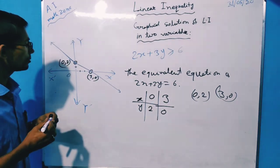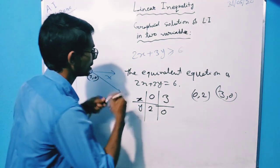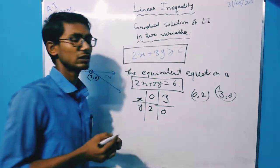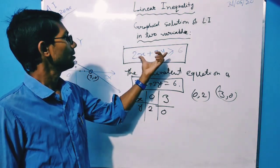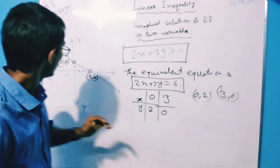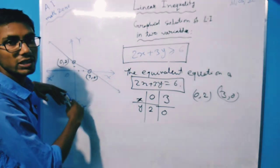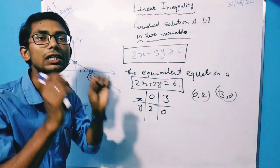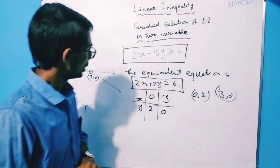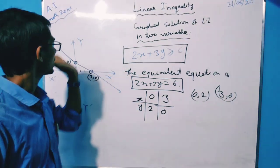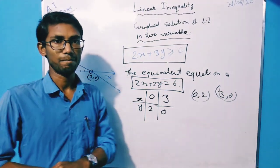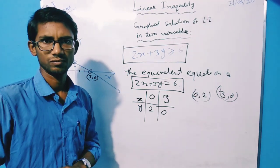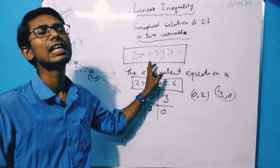This is the line for the linear equation. But we are asked to find the graphical solution of the linear inequality. For your kind information, the solution region will be either the upper side of this line or the lower side of this line. And since there is an equality sign, this line will also be included in that region. To identify which region will be the solution region, just take one point on any side of the line and check whether the point satisfies the linear inequality or not.